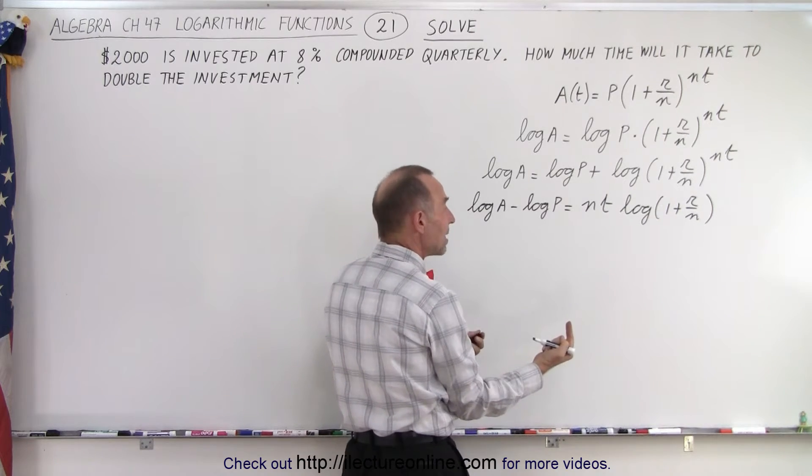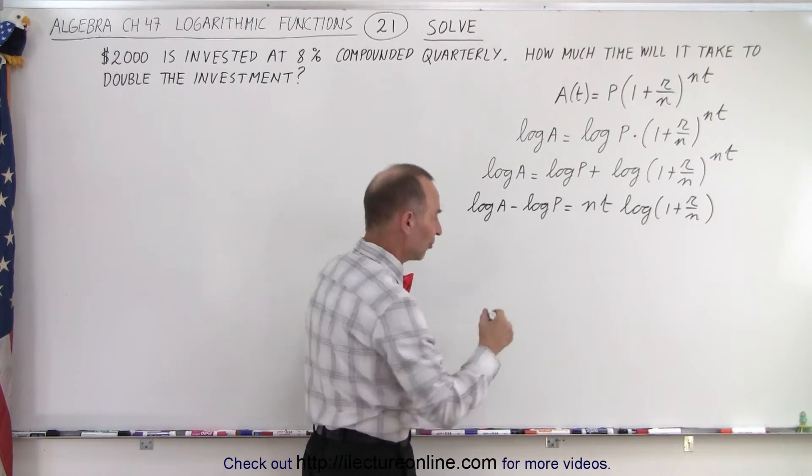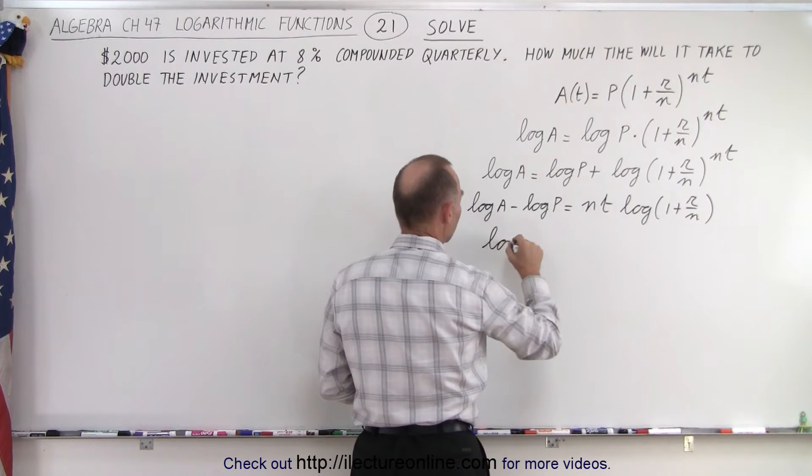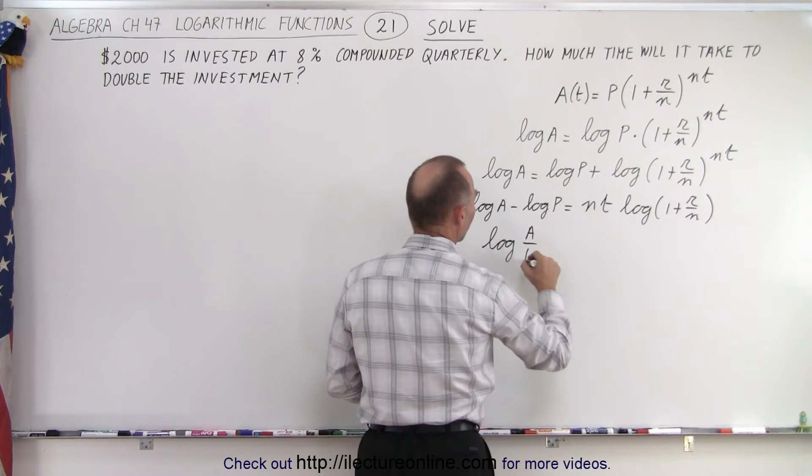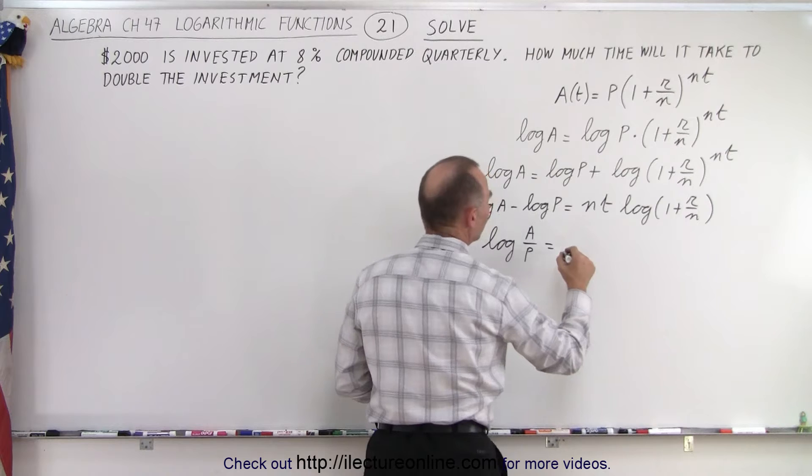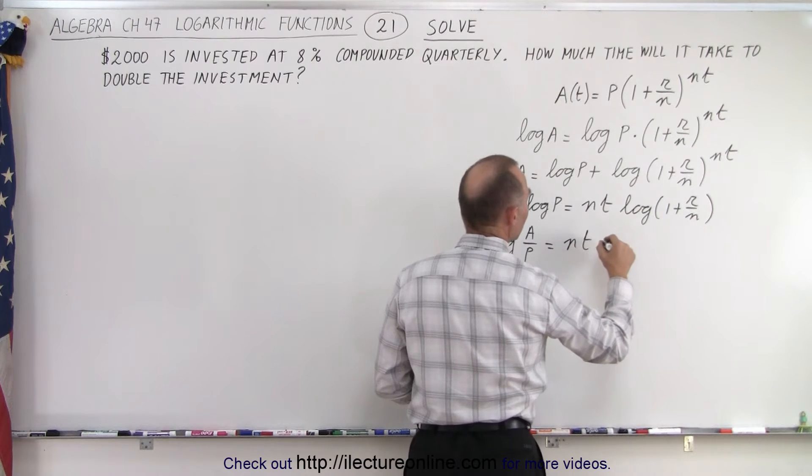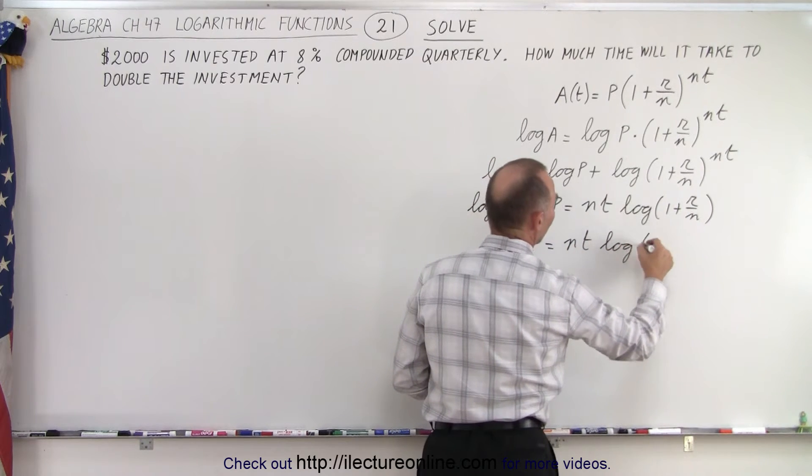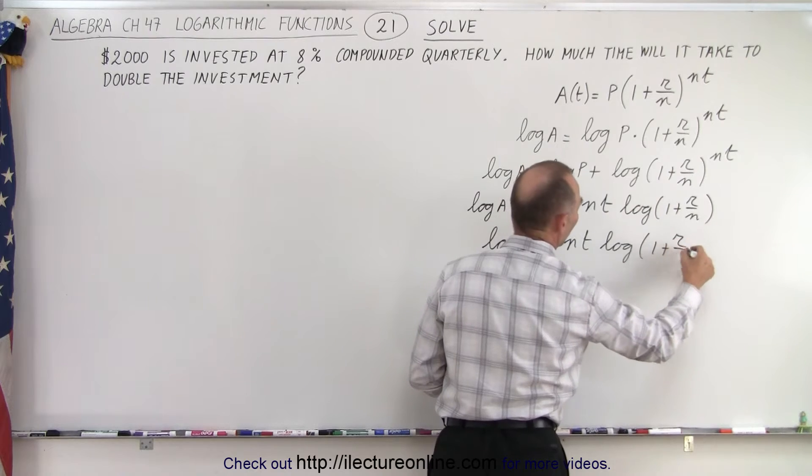So we can kind of take the quotient rule in reverse. So this can be written as the log of A over P, and that is equal to n times t times the log of 1 plus r over n.